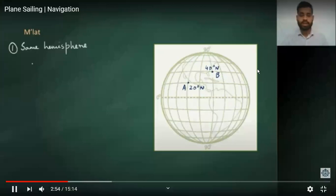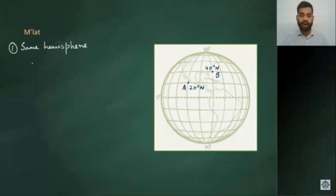If you are in the same hemisphere, you take the arithmetic mean. If you're in different hemispheres, you take the difference and then divide by 2 and name them as per that.